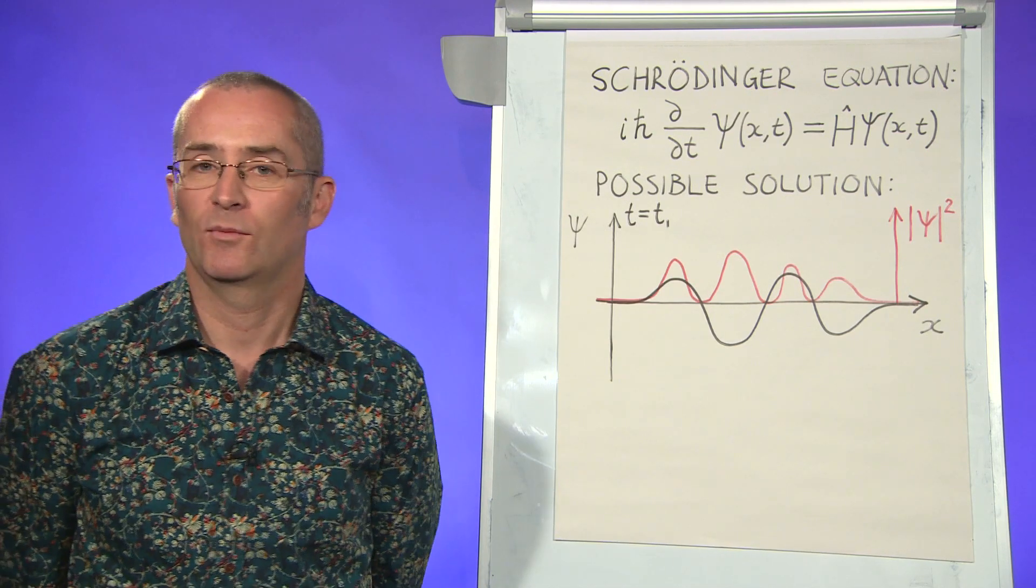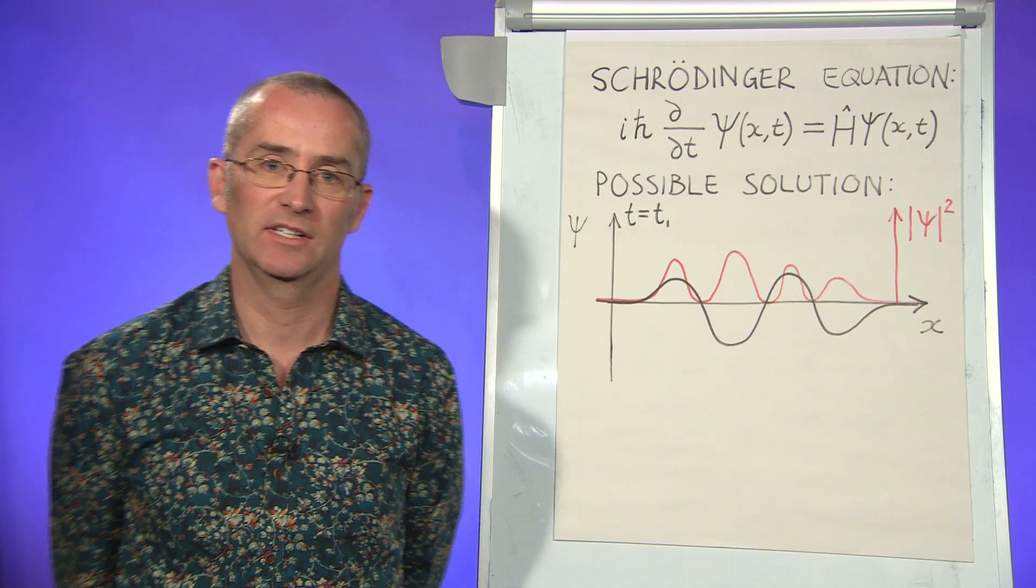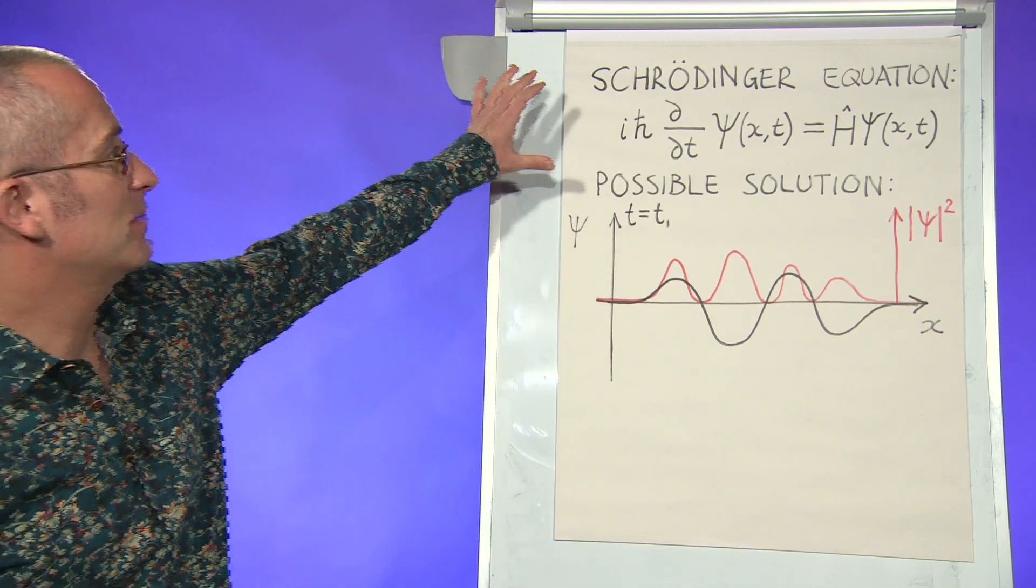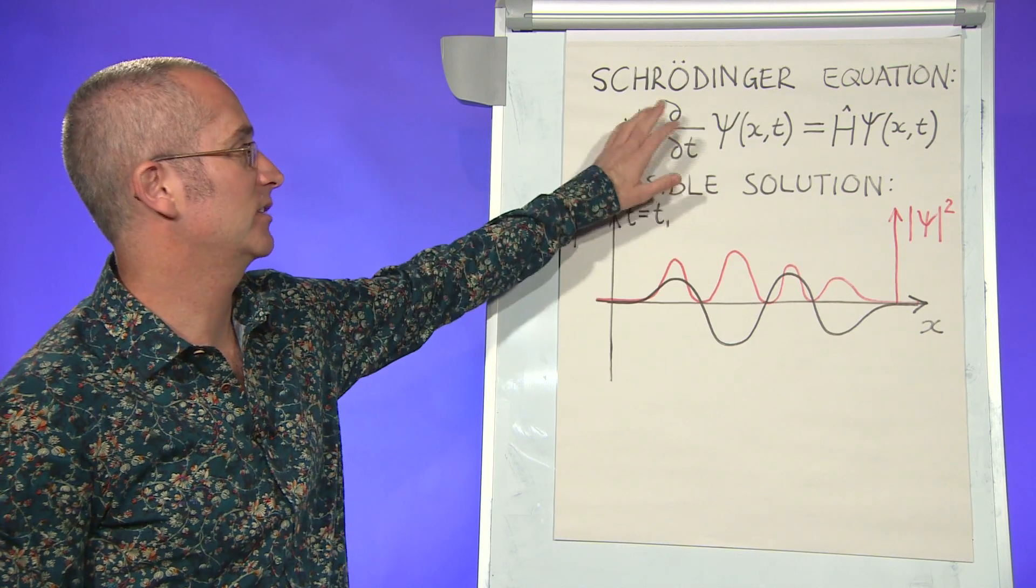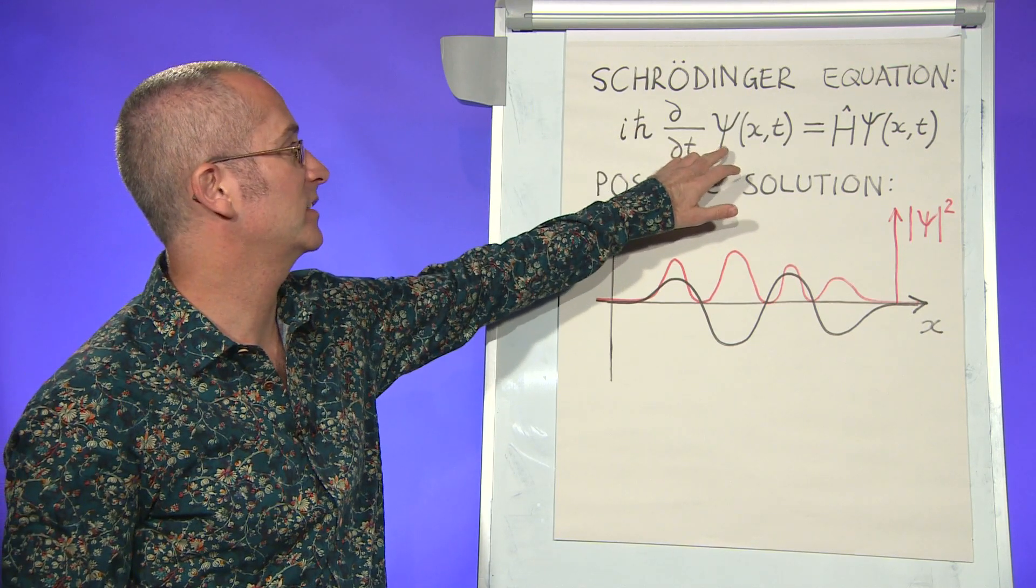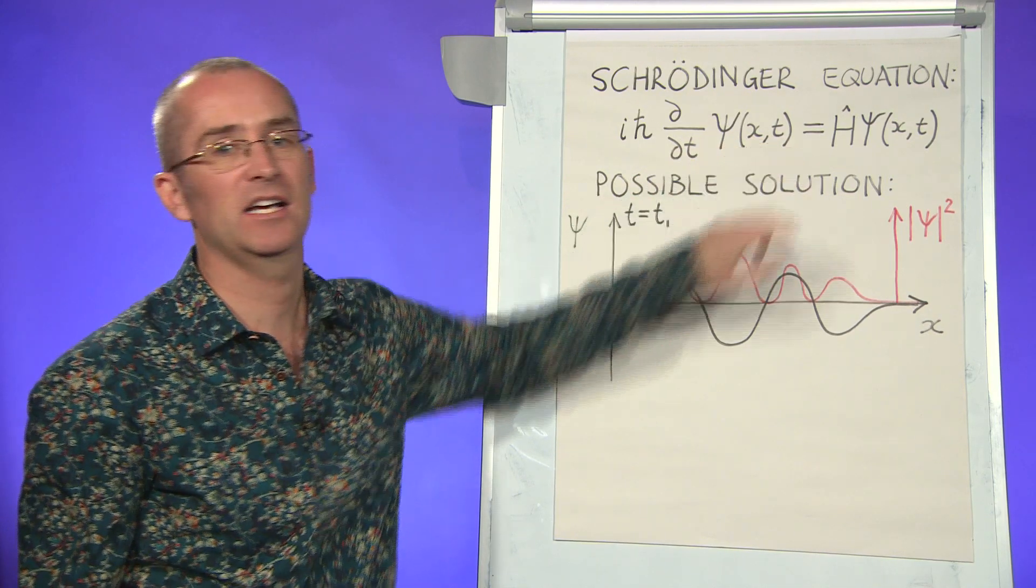But to start off with, why would the wave function be anything to do with the real world? The wave function comes about from solving something like Schrödinger's equation up here, where this is a differential equation that you solve to get this wave function, in this case as a function of position and time.